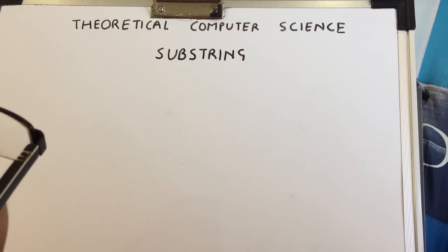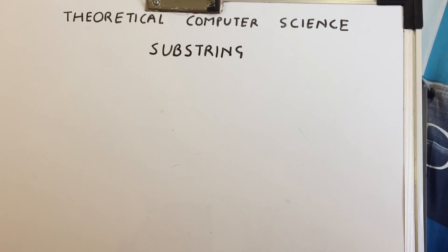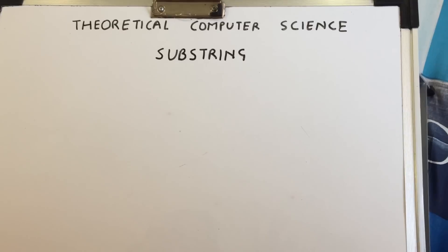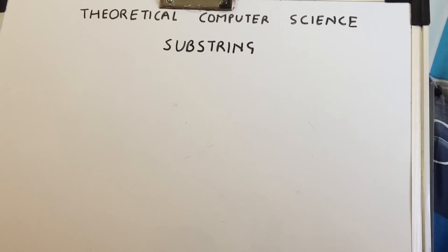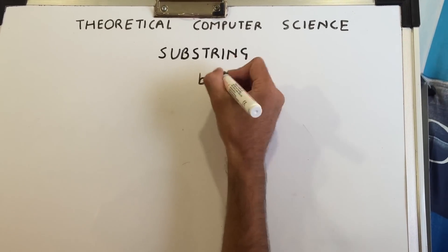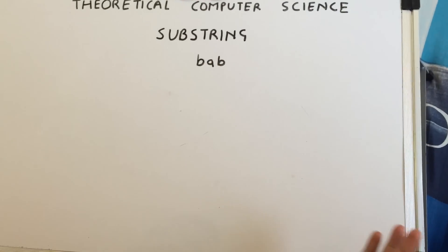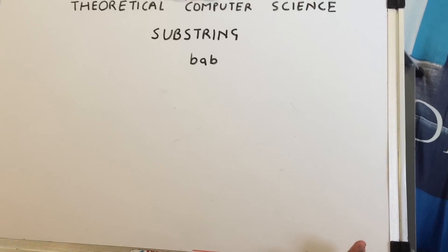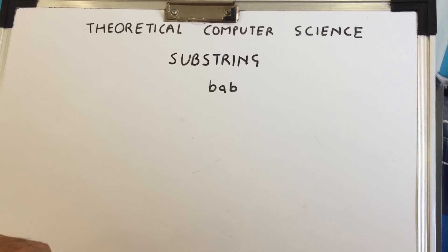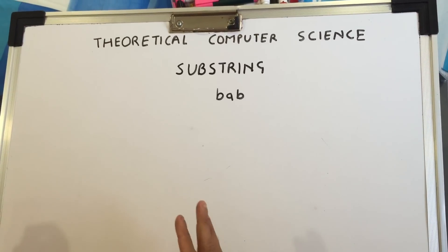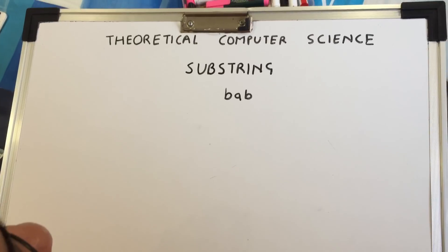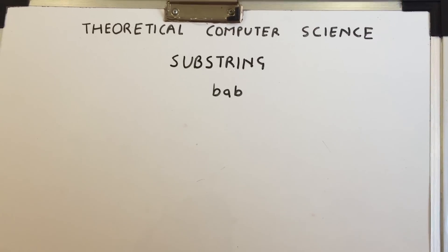Hey guys, so today we're going to continue with our theoretical computer science series. Today I'm going to teach you a deterministic finite automata containing a substring. I'm going to take an example — a string should contain a substring 'bab' and our DFA should be able to recognize this. I'm going to teach an excellent method, slightly different from what others teach. If you're not familiar with this, you should see the other videos of our TCS series.